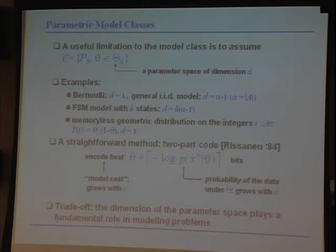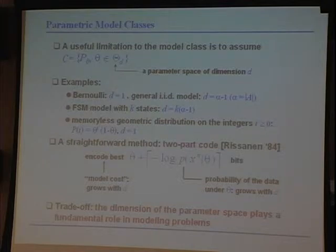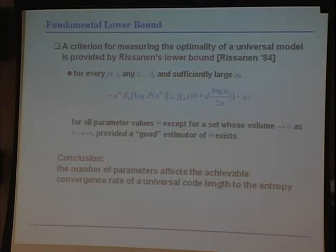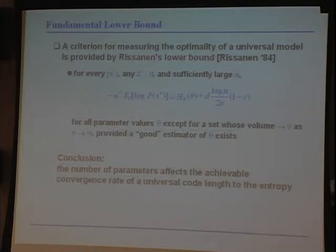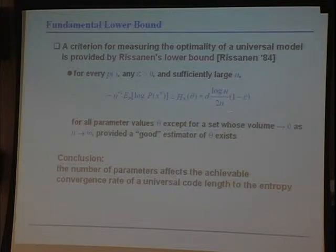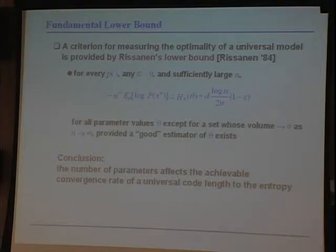The trivial idea for encoding with a parametric model class is to look at the data in two passes. In the first pass, you find the best model adapted to that data — the model cost — and then compress the data with respect to that model. There is a trade-off: the more parameters you have, the more expensive it is to encode the best parameter, but the better you can fit your data. The dimension of the parameters plays a fundamental role in modeling problems — you don't want to over-parametrize your data.